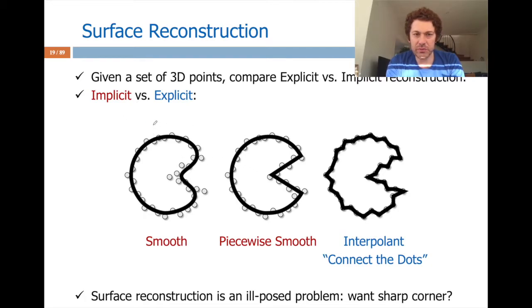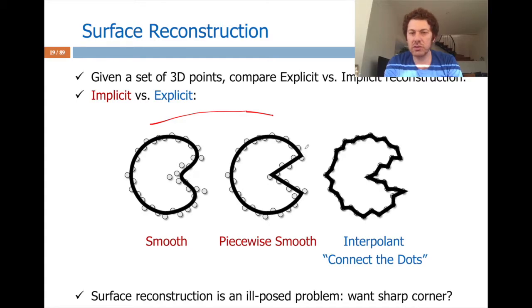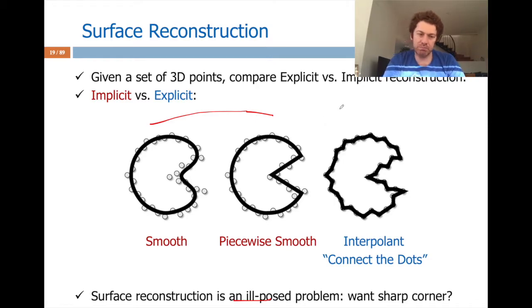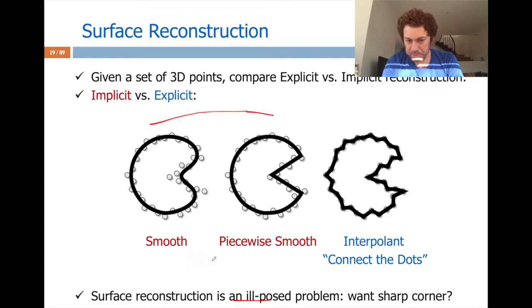The red ones are explicit reconstructions — they approximate the point set either with global smooth approximation or piecewise smooth approximation where the pieces aren't necessarily smooth between them. With explicit reconstruction, interpolating points is an ill-posed problem: do I want a sharp corner or a smooth curve? To remedy this ill-posed effect we need to regularize with priors — some prior knowledge to avoid ambiguity.